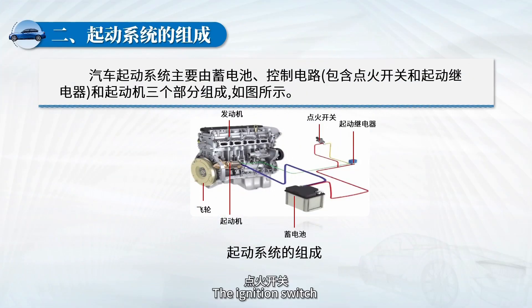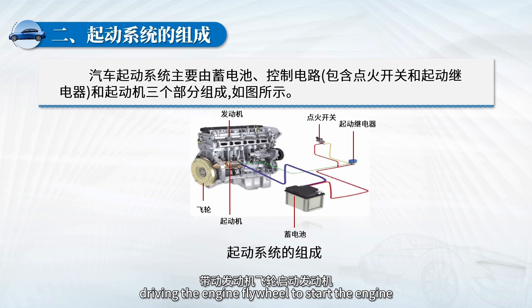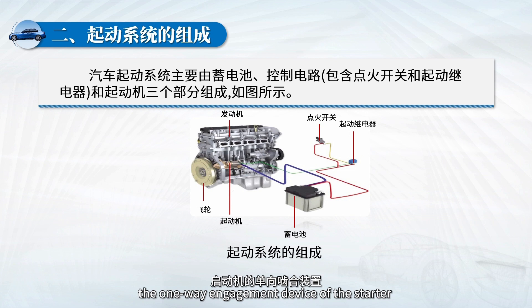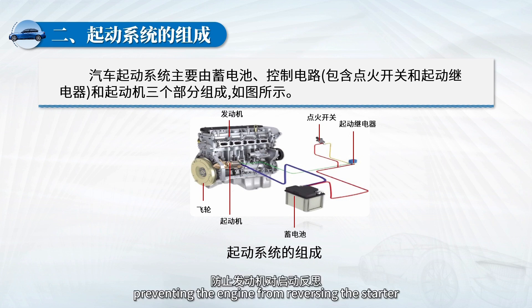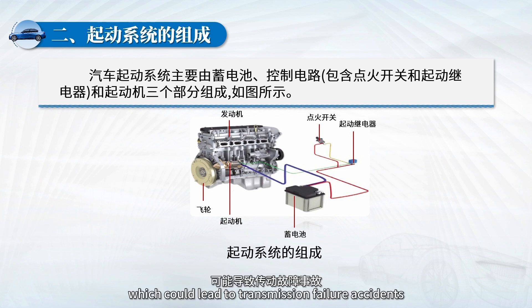The automobile starting system mainly consists of the battery and control circuit. The control circuit includes the ignition switch, starter relay, and the starter. The ignition switch is used by the driver to start the engine; the starter relay controls the operation of the starter. After starting, the one-way engagement device of the starter protects it by preventing the engine from reversing the starter and causing it to overspeed, which could lead to transmission failure.